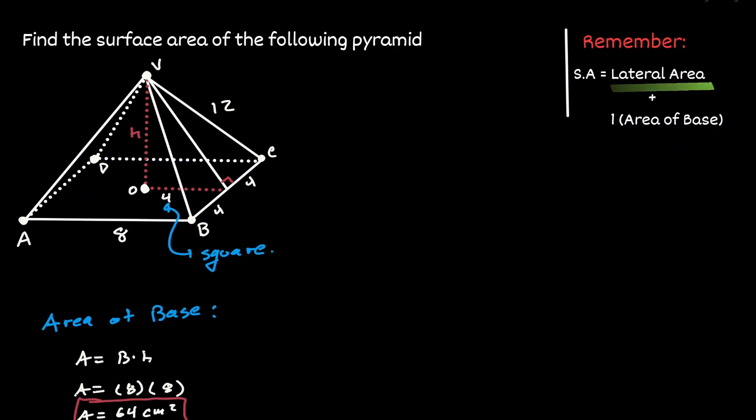And now to find the lateral area, let's try to find the area of one of the triangles that define the side of this pyramid. And we know that the area of a triangle is 1 half times the base times the height. And at least we know what the base of this triangle is.